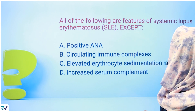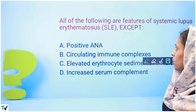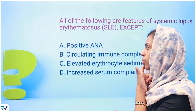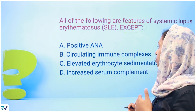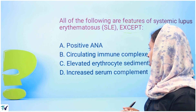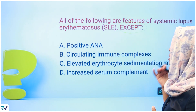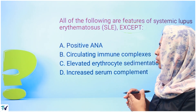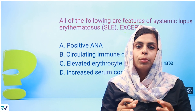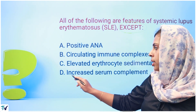Next question: all of the following are features of systemic lupus erythematosus (SLE), except? The options are: positive ANA — SLE is normally positive ANA. Circulating immune complexes — present in SLE. Elevated erythrocyte sedimentation rate — also a feature of SLE. And increased serum complement — but in SLE, complement is consumed due to immune activity, so the answer is increased serum complement.